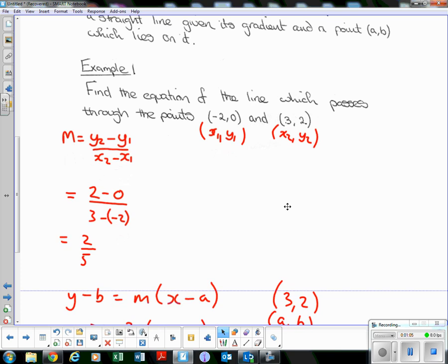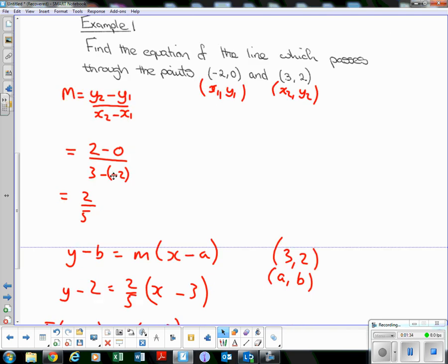Let's go straight into an example. Find the equation of the line which passes through the points (-2, 0) and (3, 2). To make things foolproof, I would suggest writing x1, y1, x2, y2 underneath your coordinates. Then it's less likely you're going to make silly mistakes. So 2 minus 0 over 3 minus negative 2, remember minus minus is a plus, so that's 2/5 for the gradient.